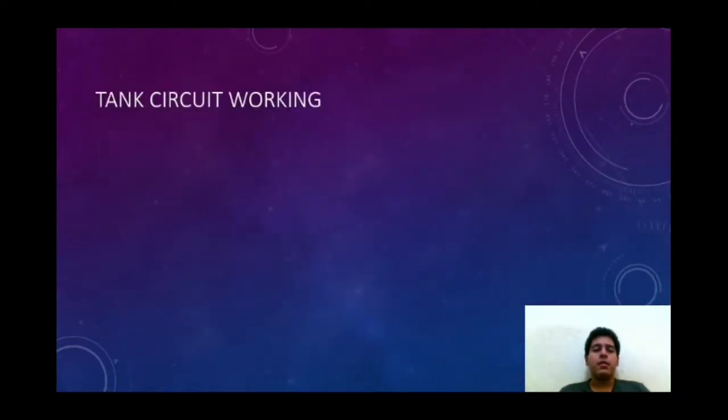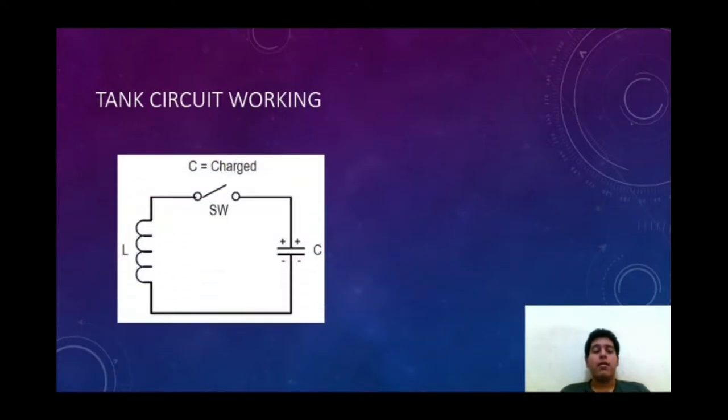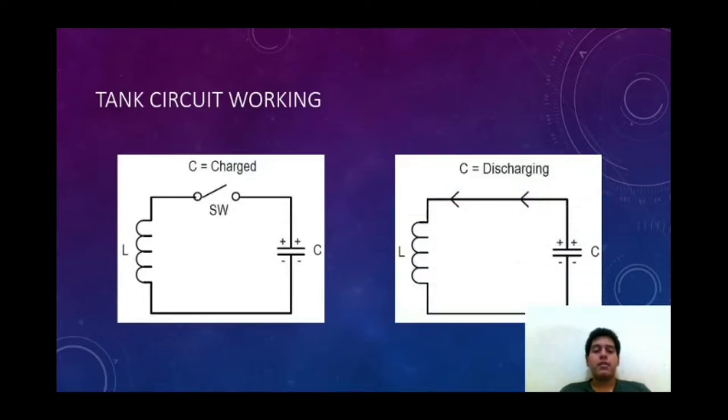Now, how does a tank circuit work? We have an LC circuit where we are going to assume that the capacitor is already charged. When we close the switch, the capacitor is going to act as a voltage source that is going to discharge. This capacitor is going to send a current in a direction to the coil. The coil will be charged,